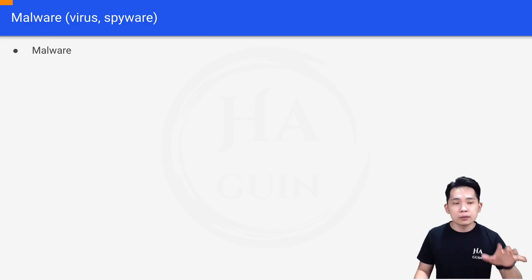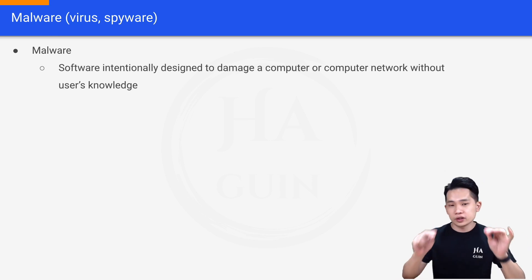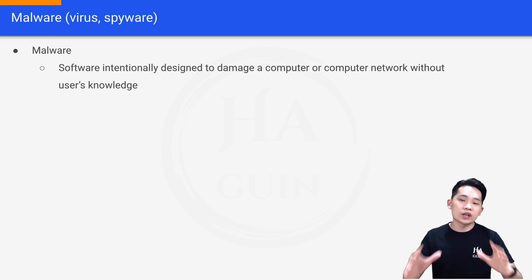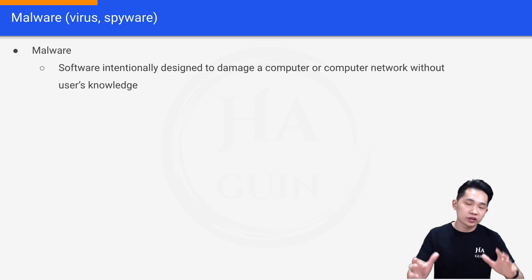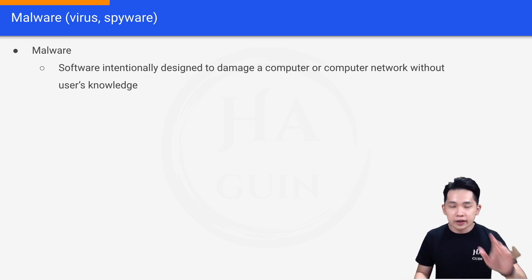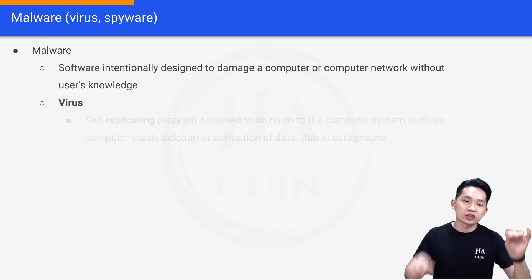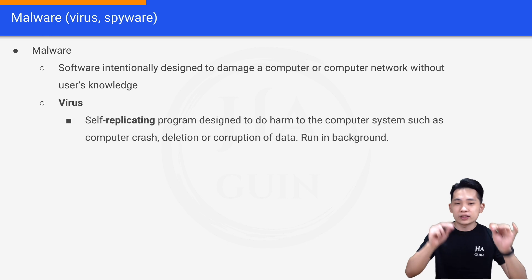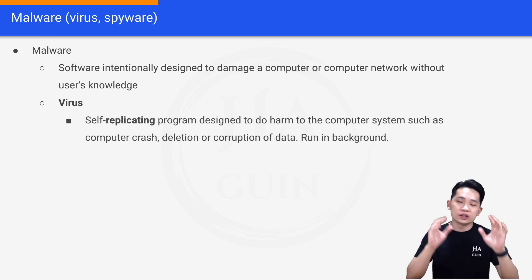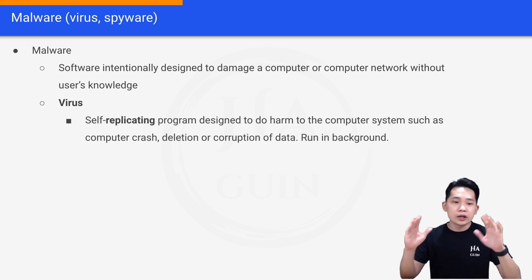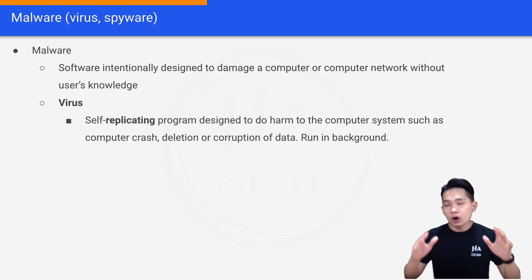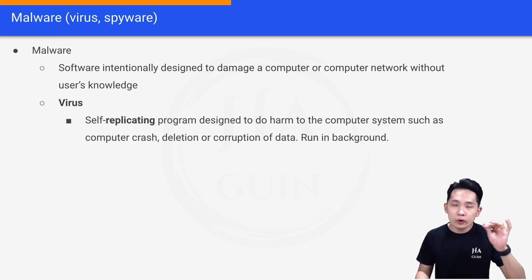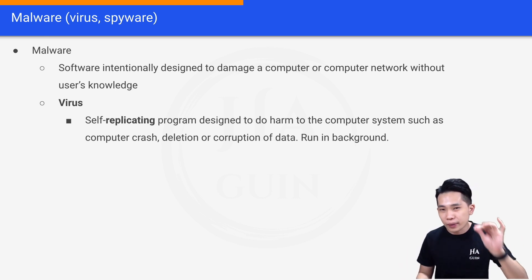So first of all, what is malware? Malware is software intentionally designed to damage your computer or computer network without the user's knowledge. Under malware, we have virus, which is a self-replicating program designed to do harm to the computer system, such as computer crash, deletion or corruption of data. It always runs in the background.